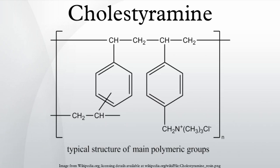Cholestyramine is commonly used to treat diarrhea resulting from bile acid malabsorption. It was first used for this in Crohn's disease patients who had undergone ileal resection. The terminal portion of the small bowel is where bile acids are reabsorbed. When this section is removed, the bile acids pass into the large bowel and cause diarrhea due to stimulation of chloride fluid secretion by the colonocytes, resulting in a secretory diarrhea. Cholestyramine prevents this by making the bile acids insoluble and osmotically inactive.